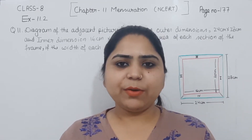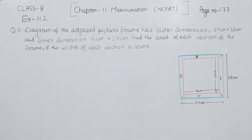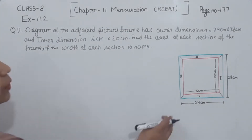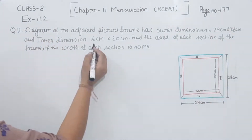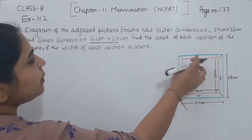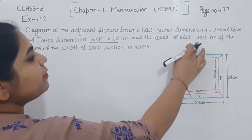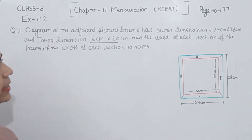Hello everyone, this is Preeti. We are with another question of exercise 11.2, page number 477, question number 11. The diagram of an adjacent picture frame has the outer dimension as 24 cm and 28 cm, and the inner dimension is 16 cm and 20 cm. Find the area of each section of the frame if the width of each section is the same.